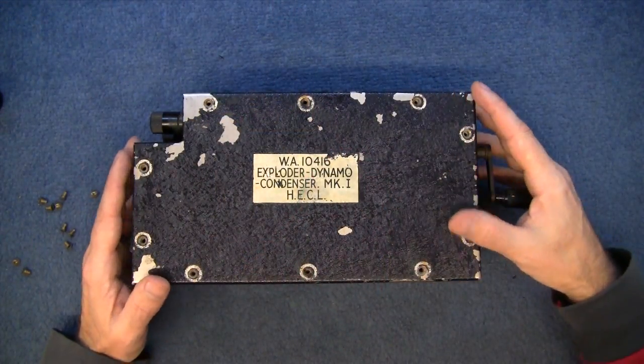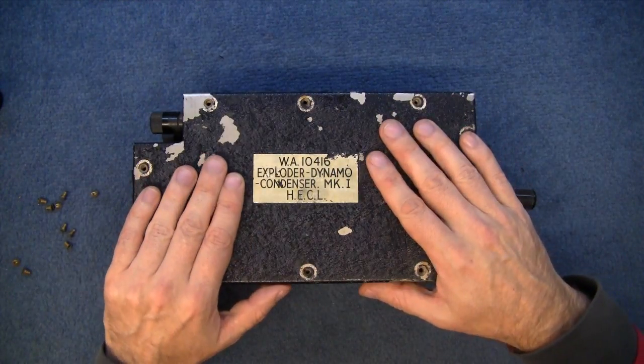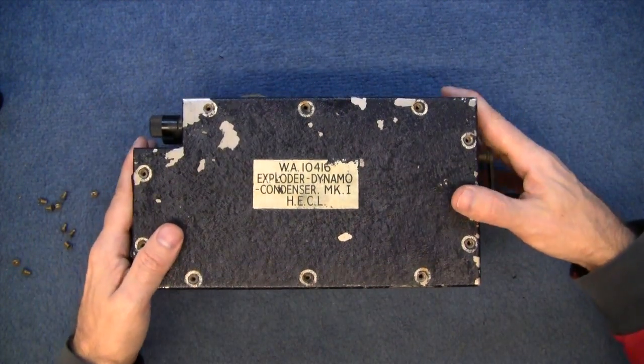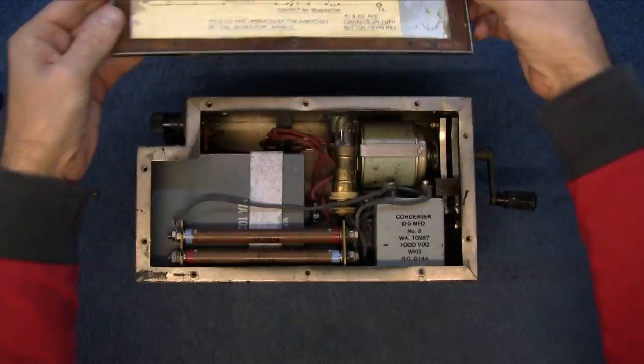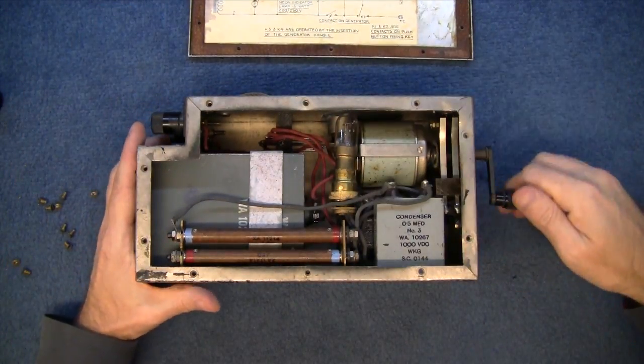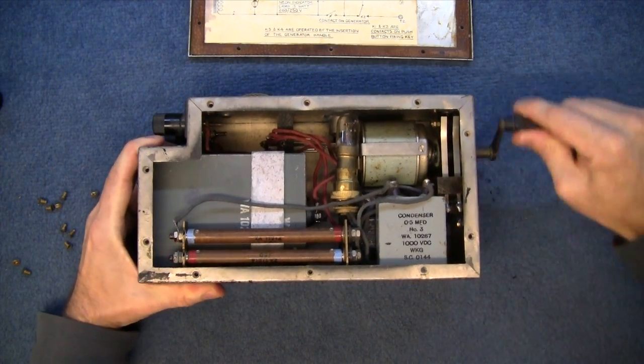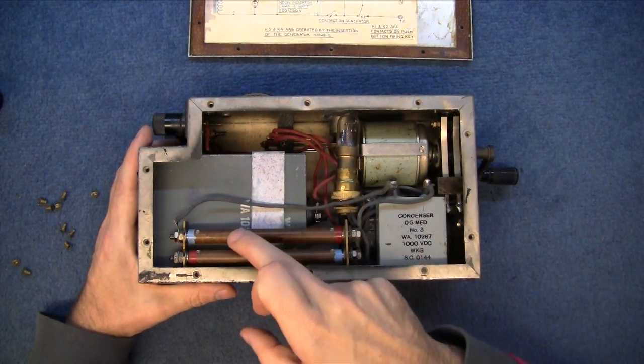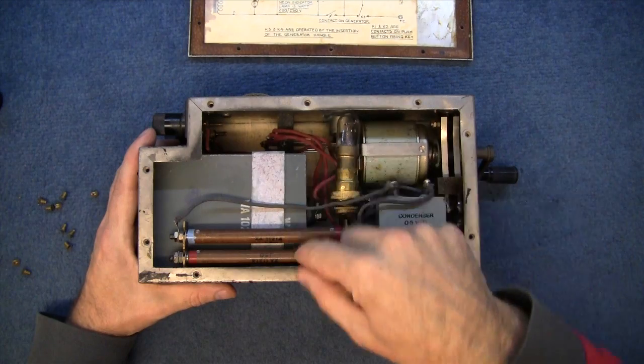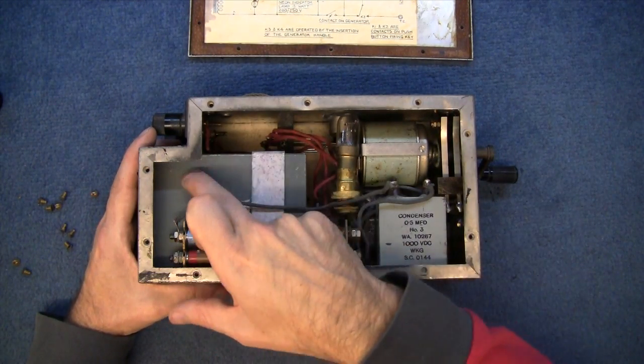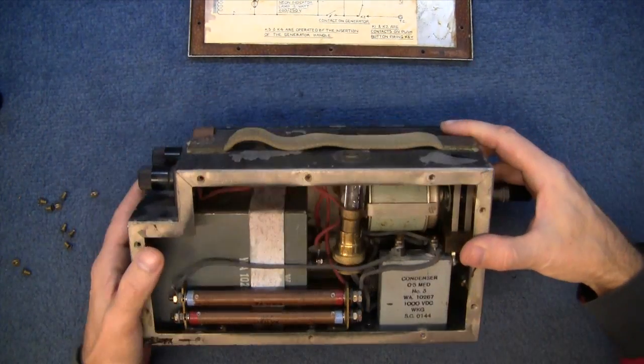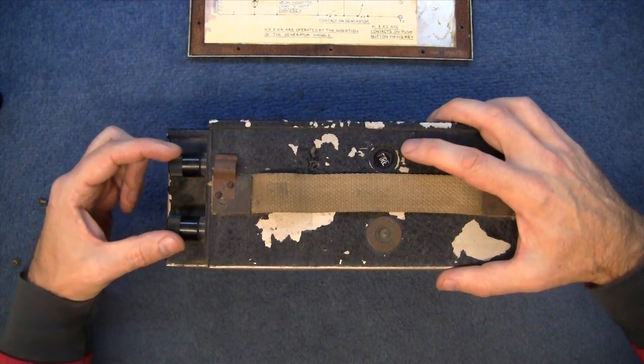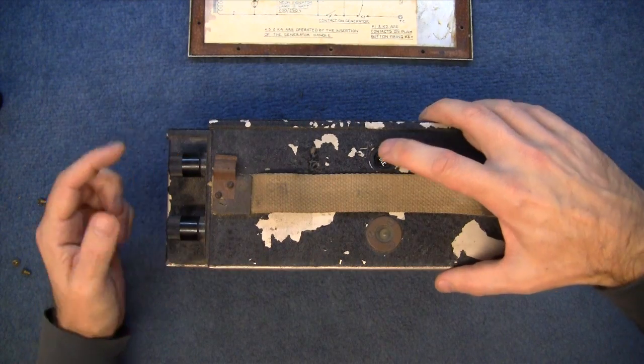Another device similar to the camera flash is this exploder or detonator. Inside there's a circuit diagram. Basically you've got a dynamo. You turn the handle and the dynamo charges through this condenser and these rectifiers into this six microfarad 1500 volts DC capacitor. When you press the fire button, the energy comes off here all in one go.